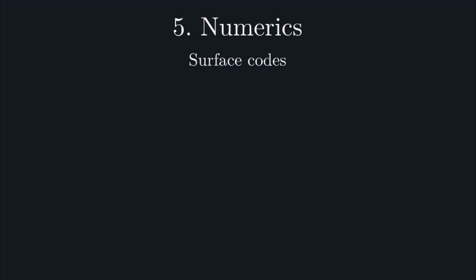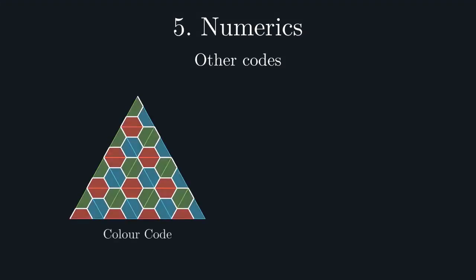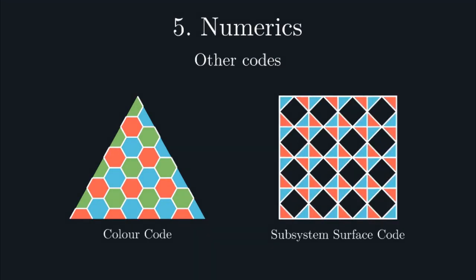Lastly, to demonstrate our technique can work for codes outside the surface code family, we also consider two other codes. Namely, the color code and the subsystem surface code, a non-commutative variant of the surface code.